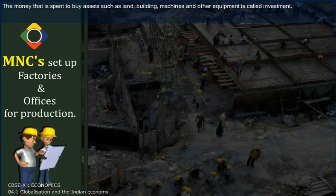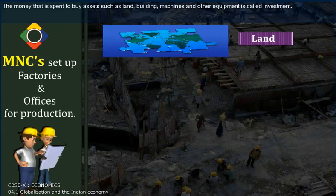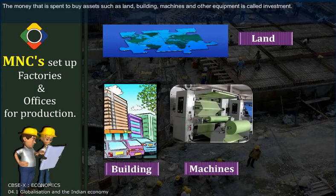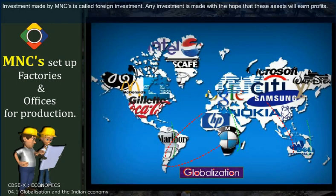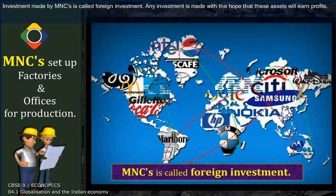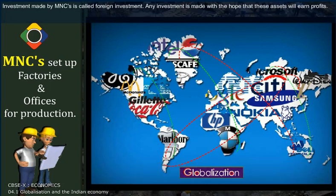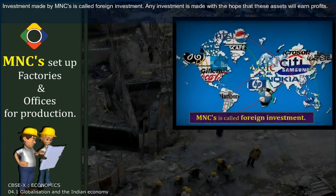The money that is spent to buy assets such as land, buildings, machines, and other equipment is called investment. Investments made by multinational companies are called foreign investments. Any investment is made with the hope that these assets will earn profits.